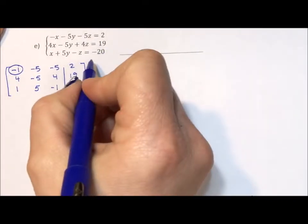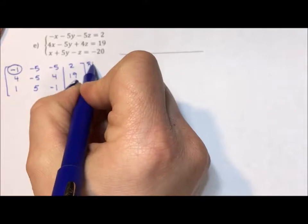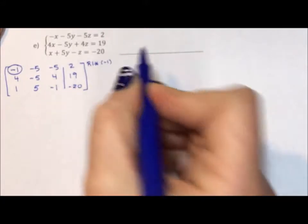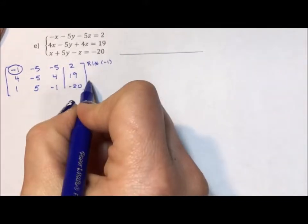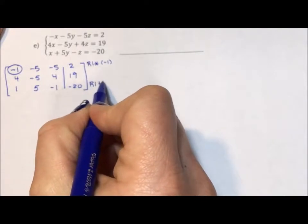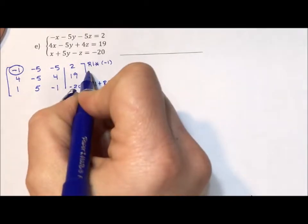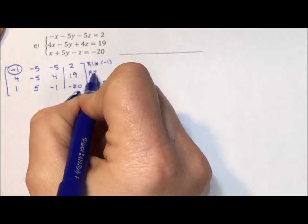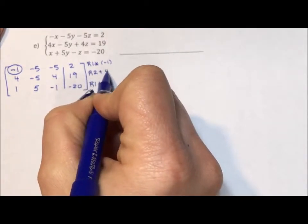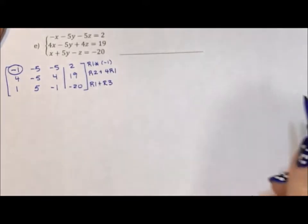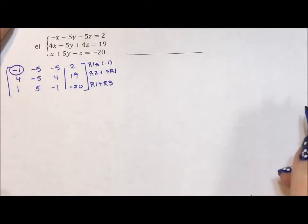So to make this a positive 1, I just need to take row 1 times a negative 1. But at the same time, if I take row 1 plus row 3, I should be able to zero this one out. And to zero out that 4, I need to do row 2 plus 4 row 1s.